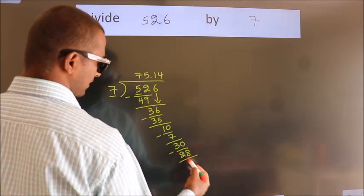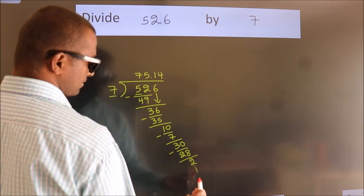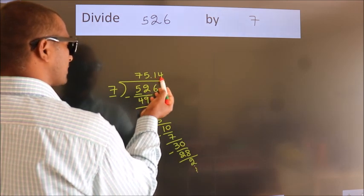Now, we subtract. We get 2. And the division continues. It is enough if we do up to 2 decimal places.